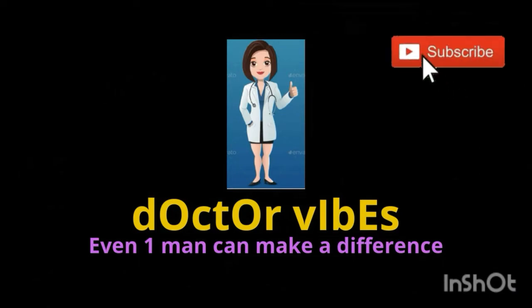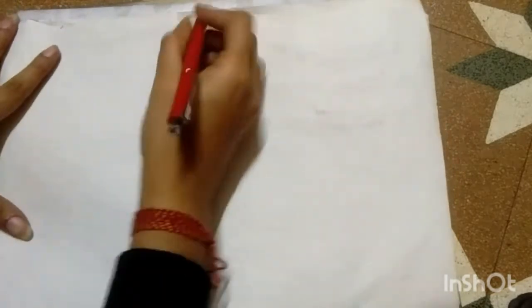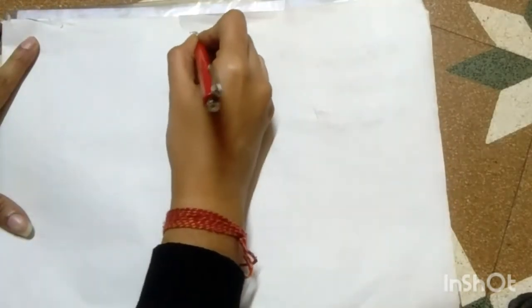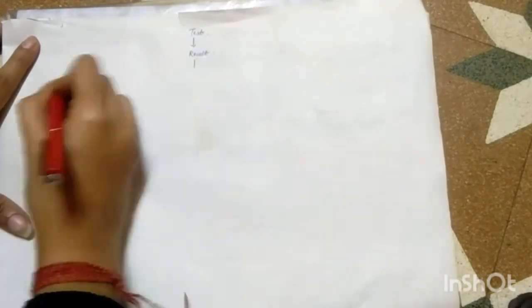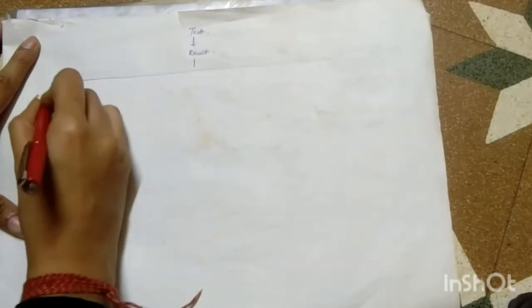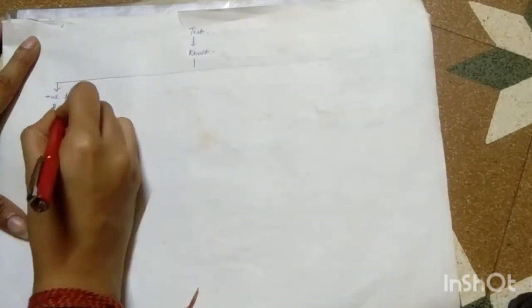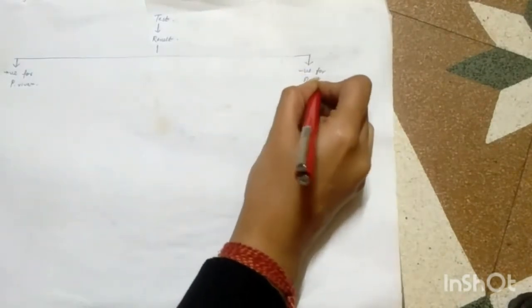Welcome to Learning Point. Let us study the regimen used for the treatment of malaria. Suppose a person has done a malarial test which will give a result, and the results can be broadly classified into two categories: one, it is positive for Plasmodium vivax, and two, it is negative for Plasmodium vivax.